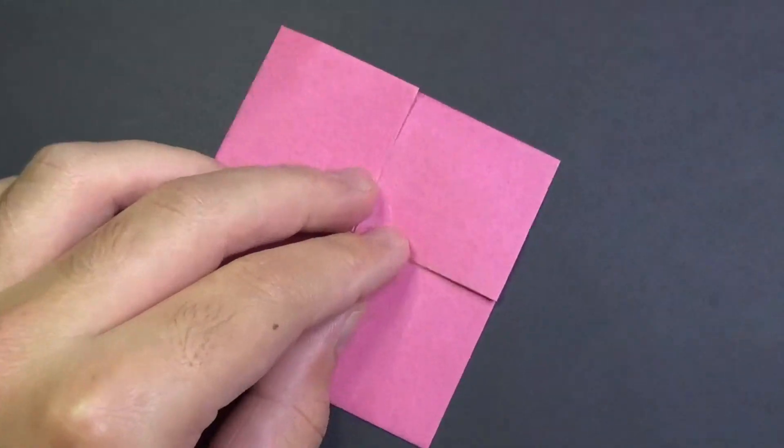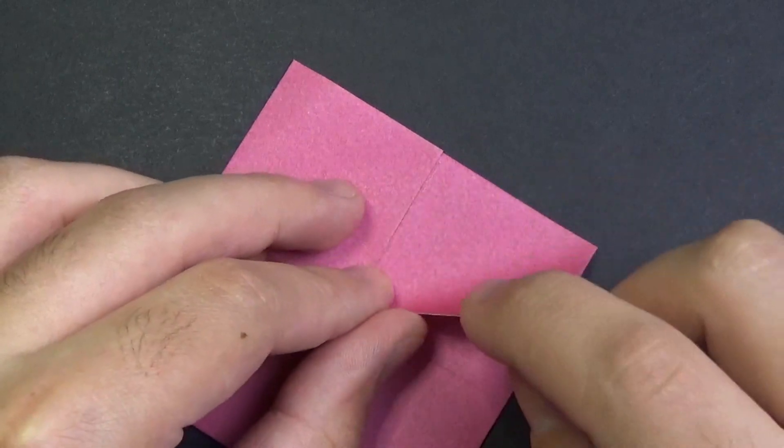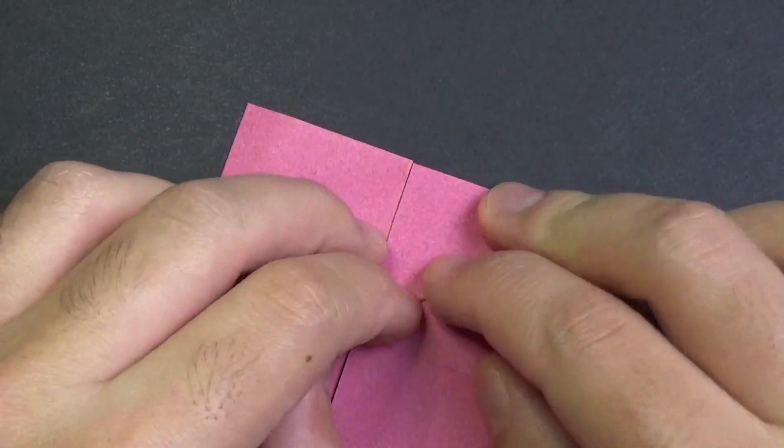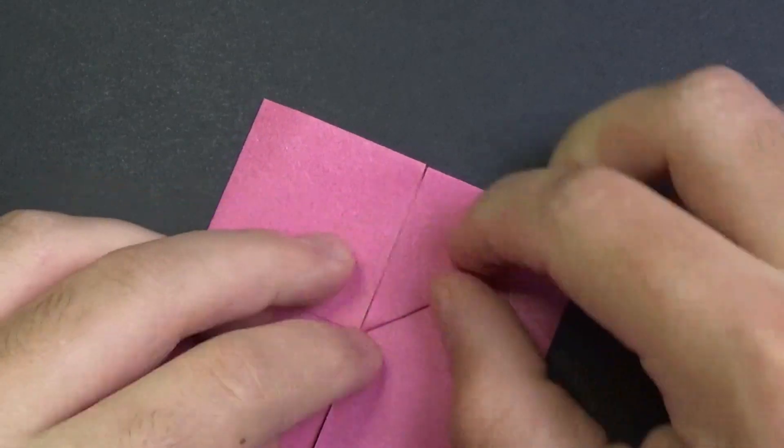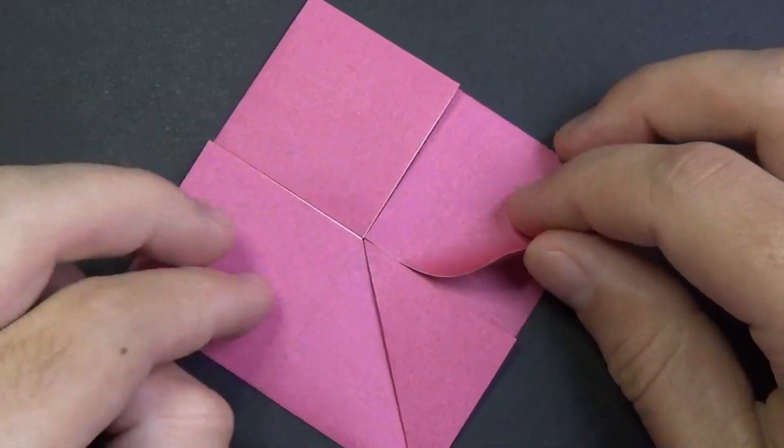And now, what we're going to do is, we're going to take this edge and fold it onto this edge. Or in other words, fold this point to this point. And do that three more times.